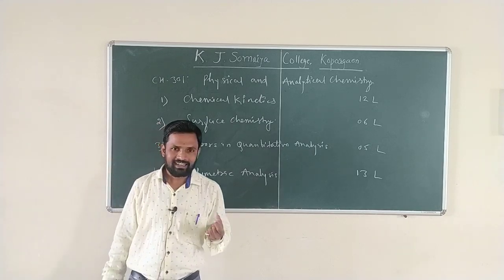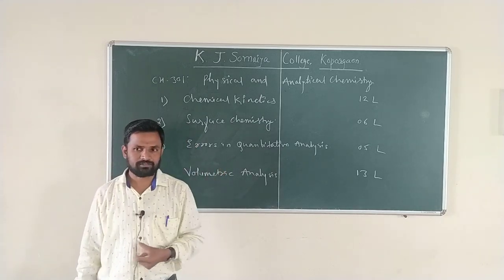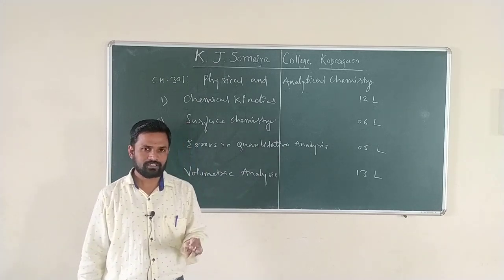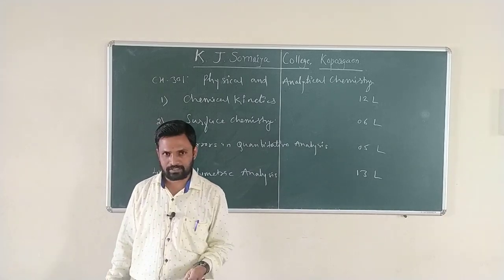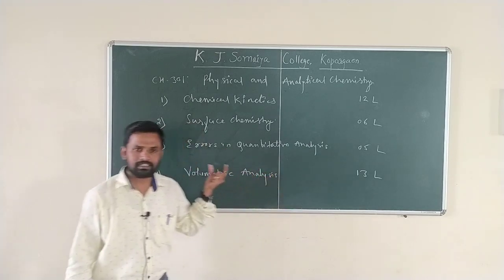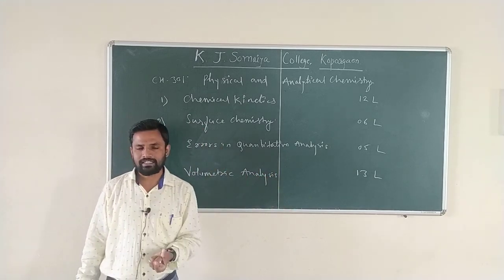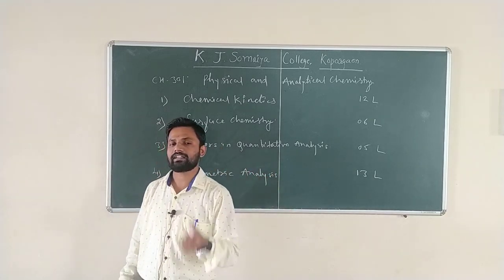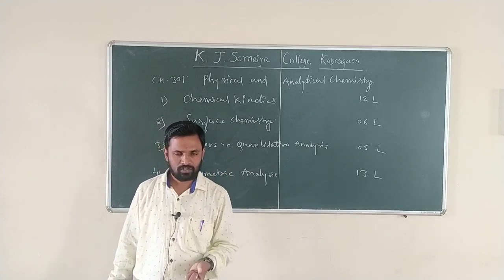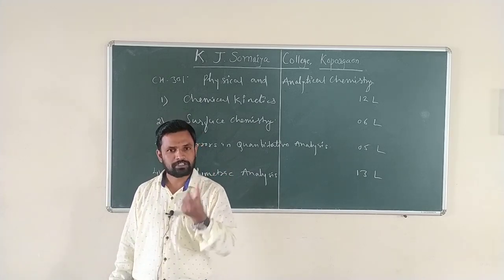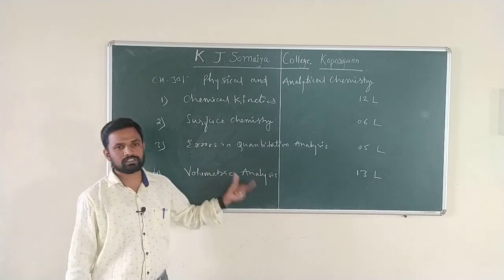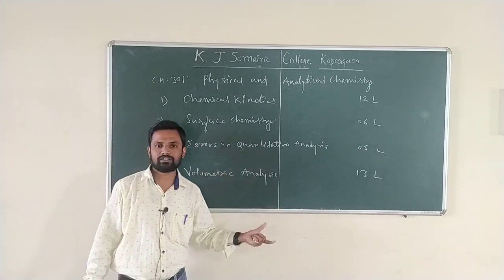The third topic comes from the analytical section. In analytical chemistry, the topic of errors in quantitative analysis is included in this semester. Here we are going to study analytical methods and what types of errors there are — what is meant by errors, what is meant by accuracy, what is meant by precision, and what is meant by significant figures. All these terms will be studied in the errors in quantitative analysis topic.